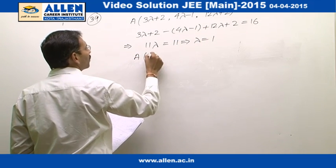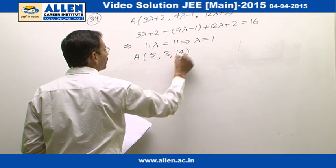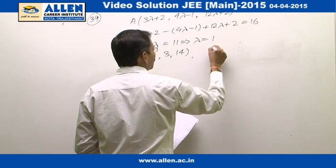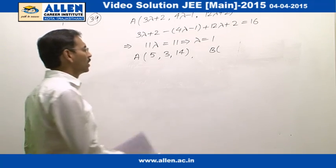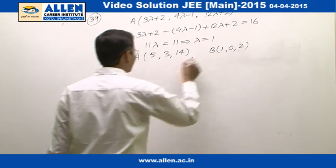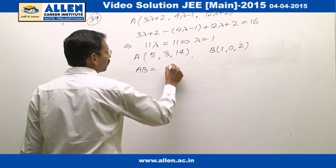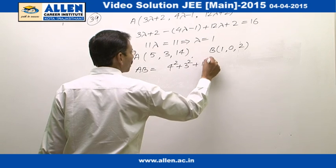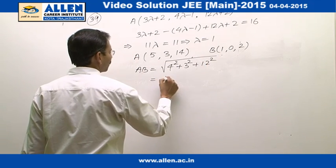So finally, we have the intersection point as (5, 3, 14), and we have to find its distance from the point (1, 0, 2). We consider that as point B. Therefore, the distance AB is the square root of 4 squared plus 3 squared plus 12 squared, which equals the square root of 169.